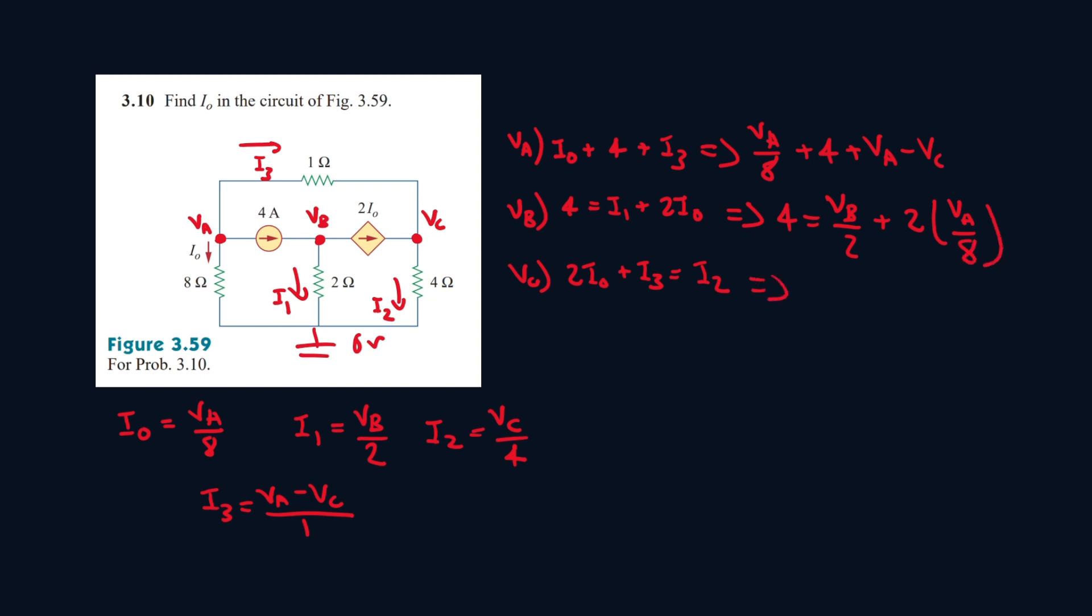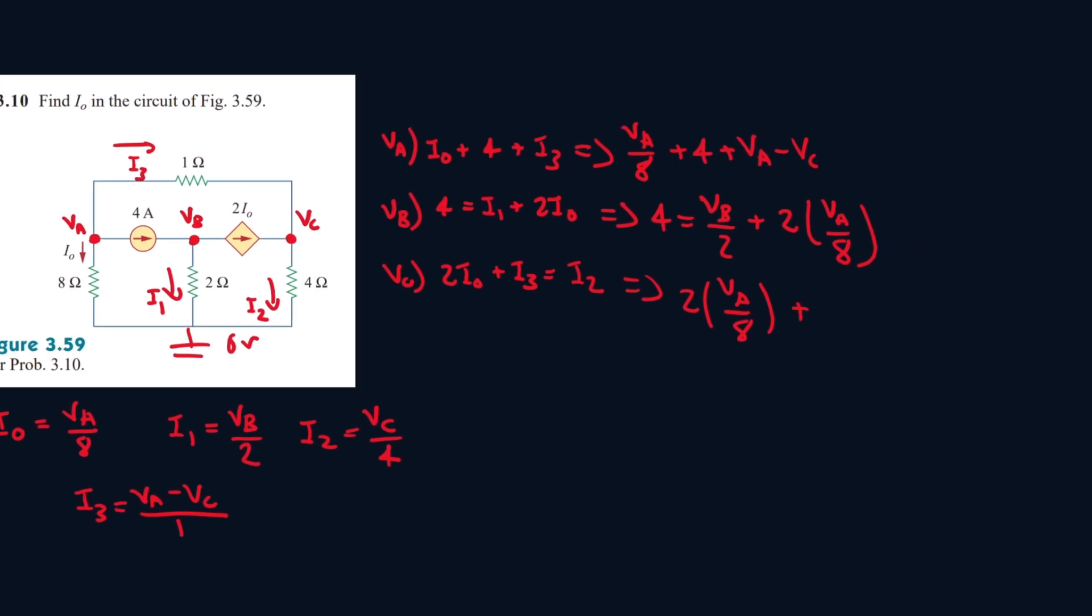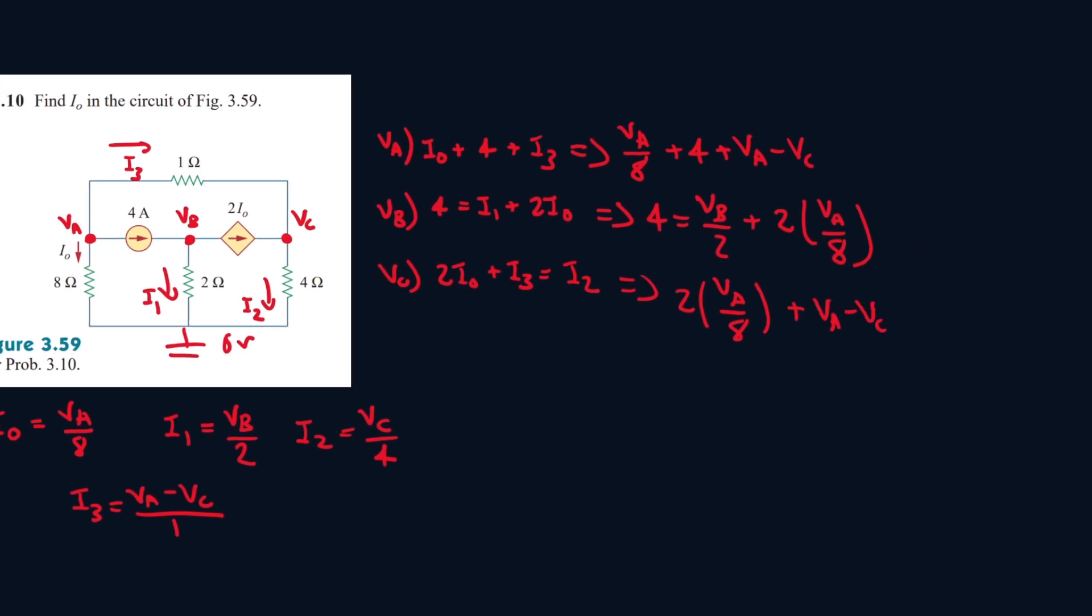And then for our third equation, it'll be 2IO, so 2VA over 8, plus I3, VA minus VC, equals I2, VC over 4.